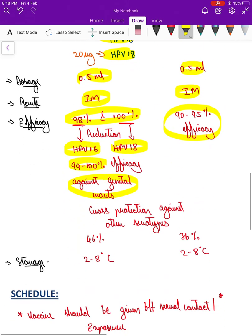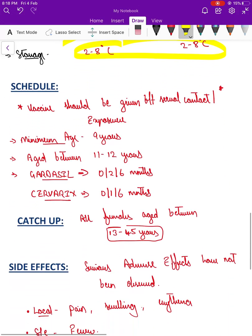They also offer some amount of cross protection against other serotypes. This is 46 percent when it comes to the quadrivalent vaccine and 36 percent when it comes to the bivalent vaccine. Storage, as we all know, is between 2 to 8 degrees Celsius.